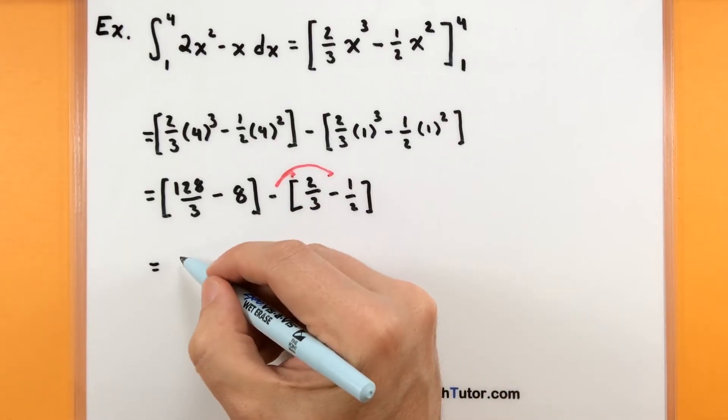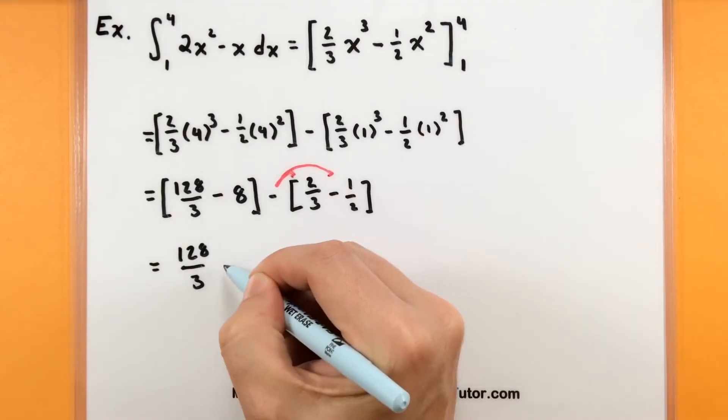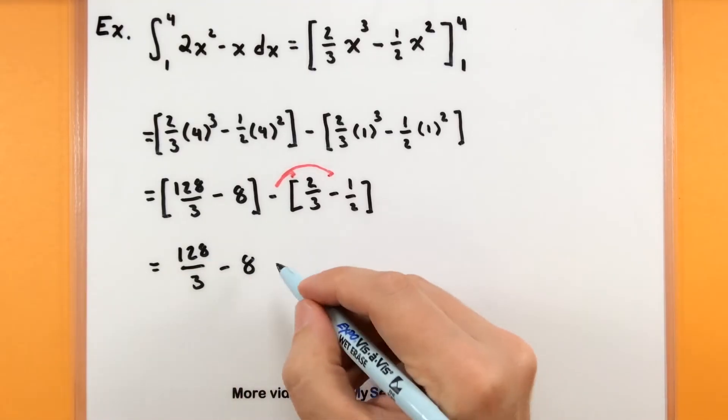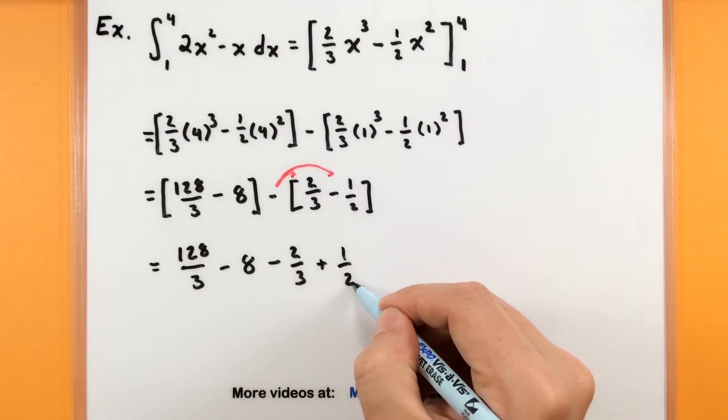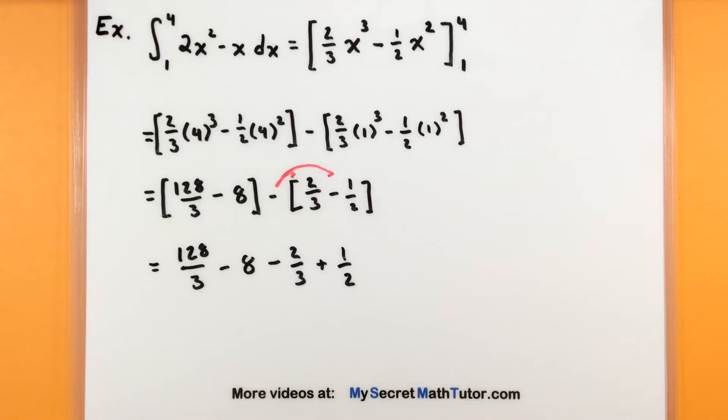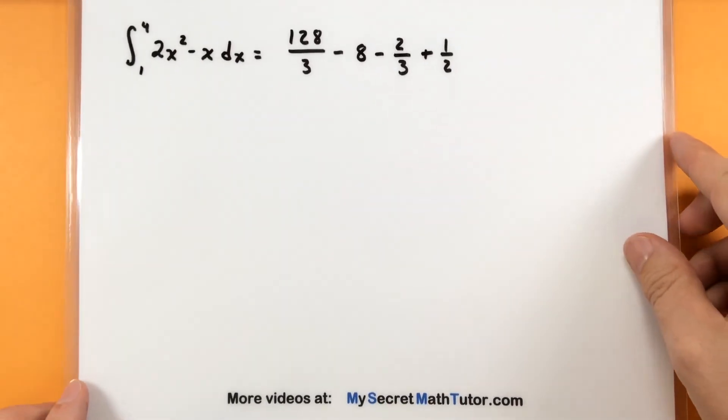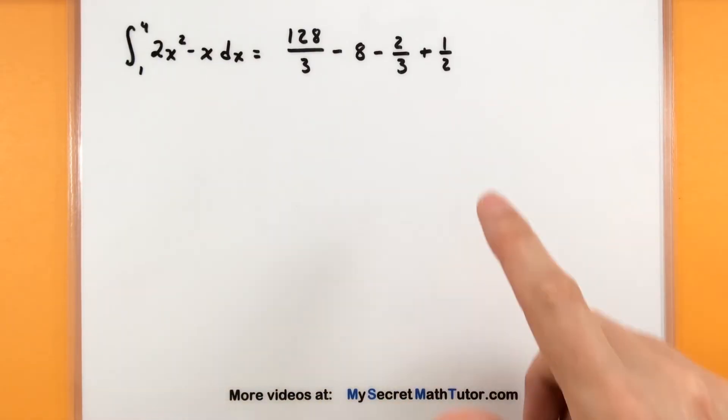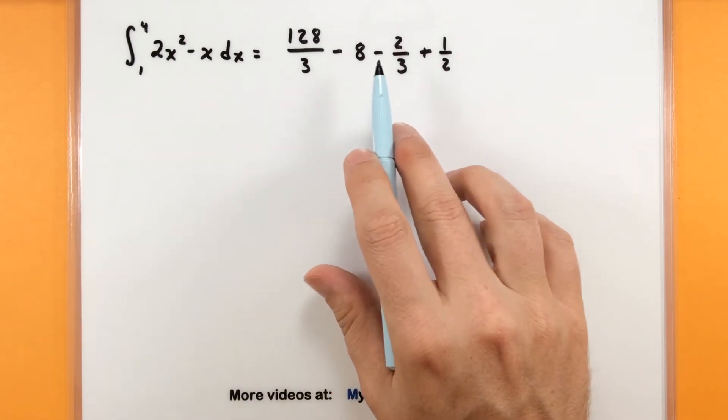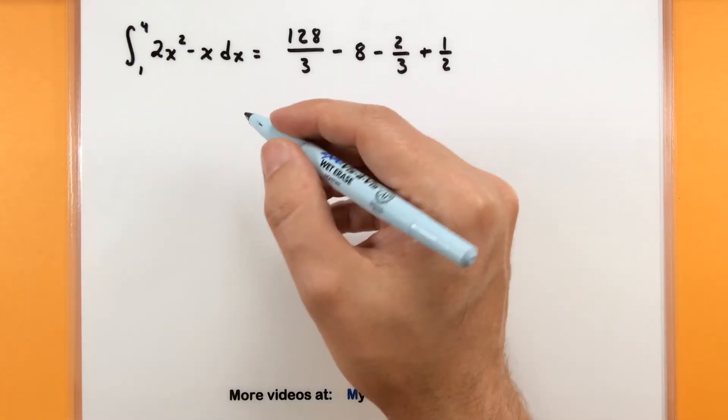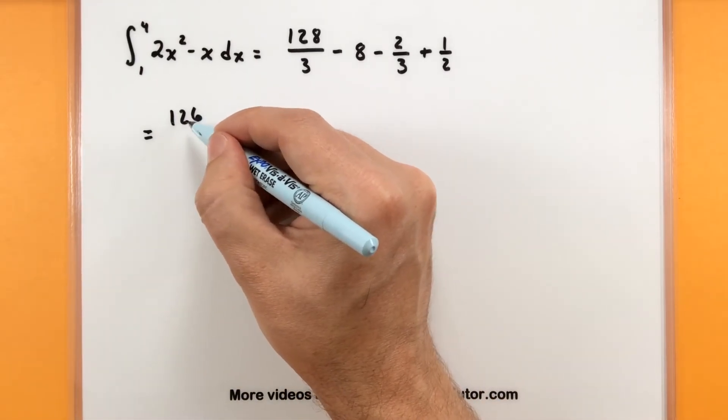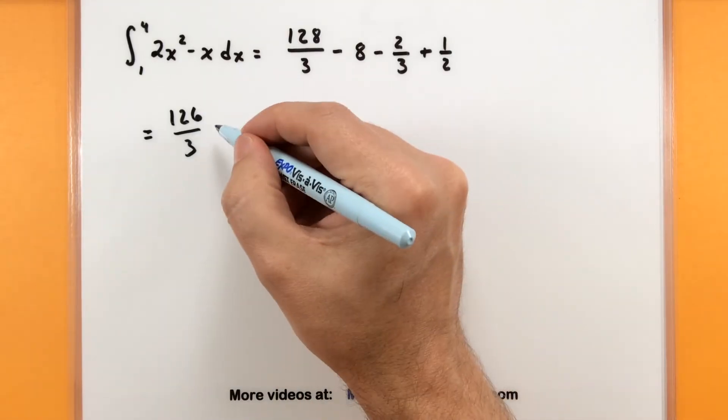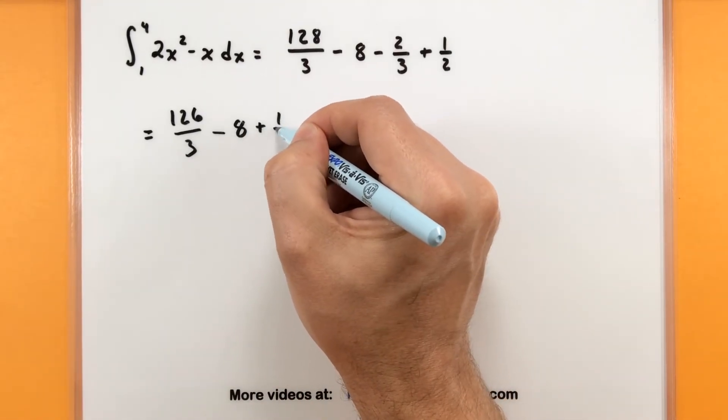This will be 128 over 3 minus 8, and then we'll have minus 2 thirds, and minus gives us plus 1 half. As we're going through this algebra, we are making progress. We've taken our integral and just turned it into these numbers, and we just have a little bit more algebra to take it farther. 128, if I subtract the 2, since these both have the same denominator, that will give me 126 over 3, and I still have this minus 8 and a plus 1 half.